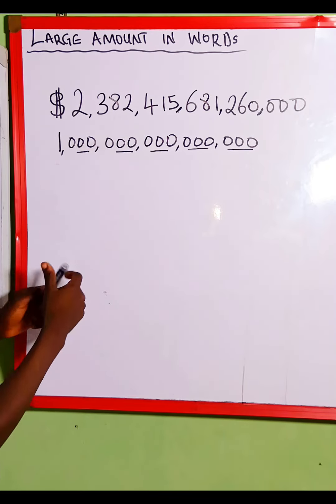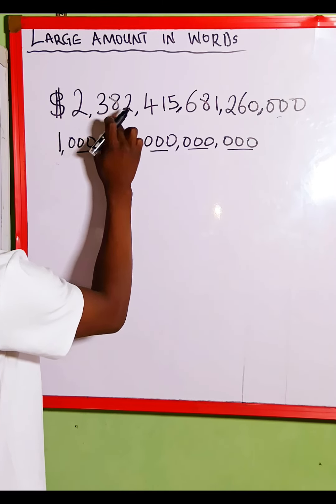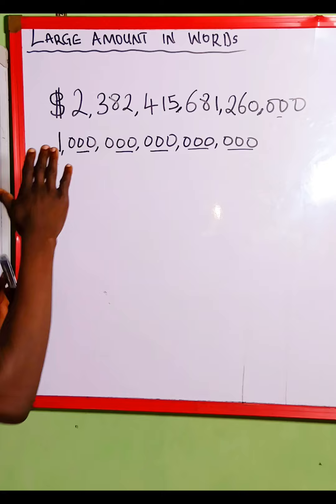So if you look at the amount given on the board, we have 1, 2, 3, 4, 5. So this is in quadrillion.